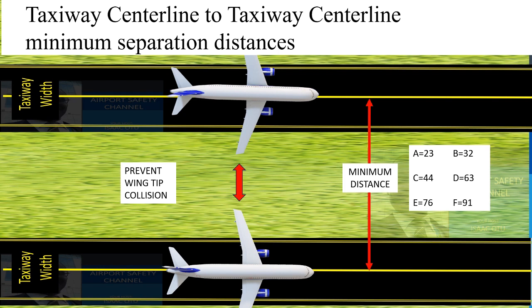Table 3.1 will also provide us with the data required. For a code A aircraft operating on the taxiway, you will have a separation distance of 23 meters. For code B, the separation distance is 32 meters minimum. Code C requires 44 meters minimum. Code E provides 76 meters, and code F requires 91 meters minimum separation between the centerlines of the parallel taxiways.